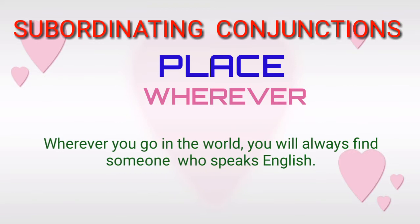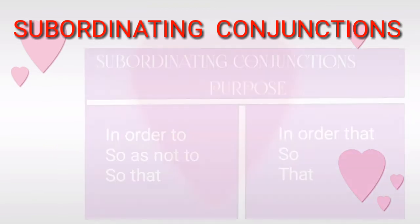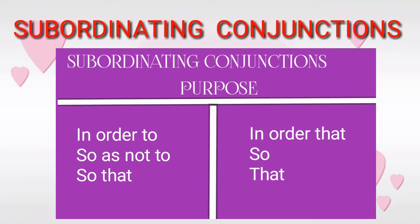Look at the box and find what are the subordinating conjunctions of purpose. The subordinating conjunctions of purpose are: 'in order to,' 'so as not to,' 'so that,' 'in order that,' 'so,' and 'that,' etc. We will discuss each one separately with examples.